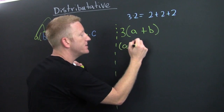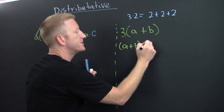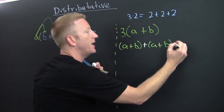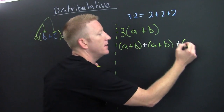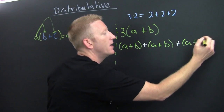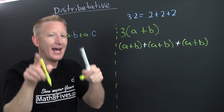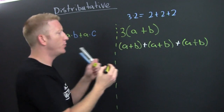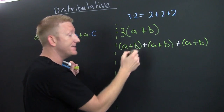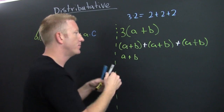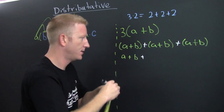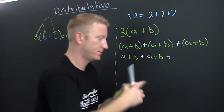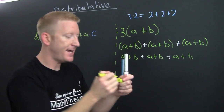We're doing the distributive property but actually we're using multiplication. We have a plus b, plus a plus b, plus a plus b. Now these parentheses are unnecessary because there's no number in front and there's no minus sign in front — so this is a plus b plus a plus b plus a plus b.